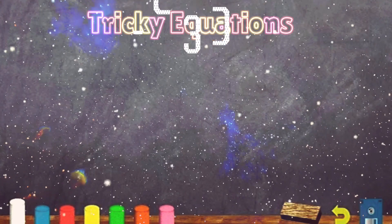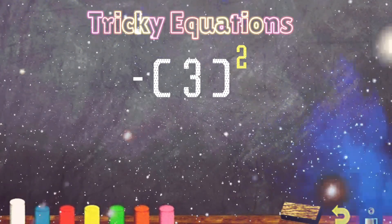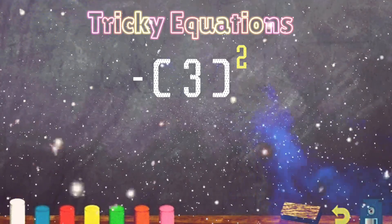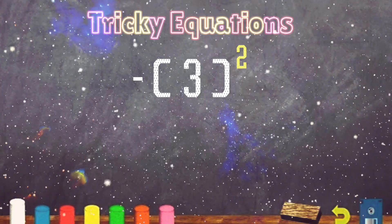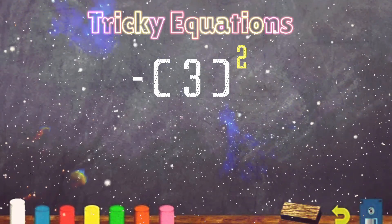Next equation. We have a negative outside of the parentheses. Then we have the number 3 in the parentheses and the exponent outside of the parentheses. This is going to be just like the previous equation. It just looks a little bit different.